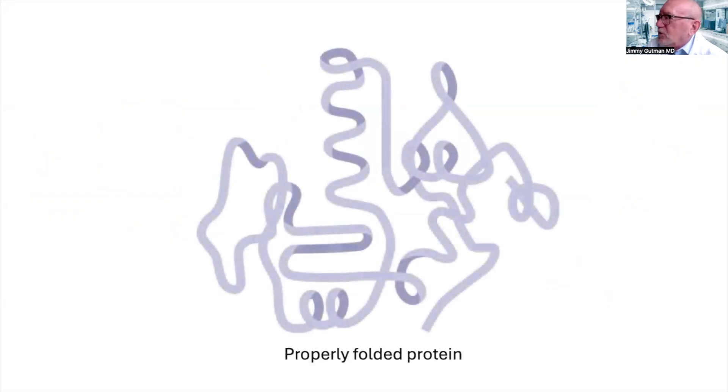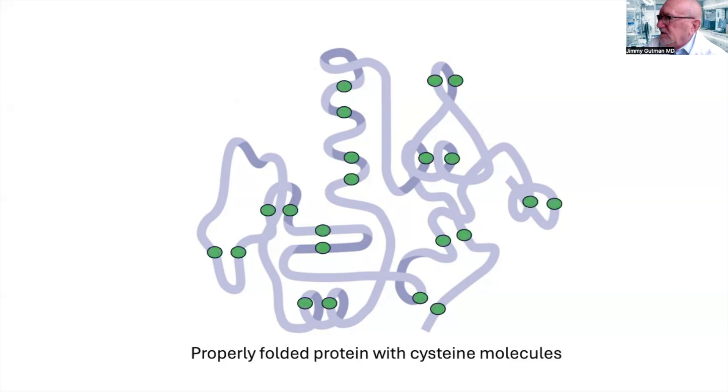Let's take a closer look at this original protein, the one that has the proper original shape, the one that is folded properly. Now, how does it keep its shape? This is a very important question. Well, in this case, it depends on the presence of cysteine molecules. Here we see the cysteine molecules represented as green circles. You see them there?